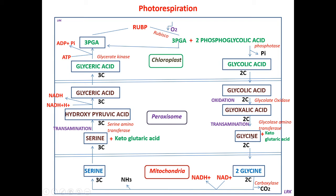This glycine enters into the mitochondria, where two molecules of glycine condense to form serine — a three carbon amino acid. Glycine is a two carbon amino acid and serine is a three carbon amino acid. Two molecules of glycine condense and form serine; here carbon dioxide is released — decarboxylation takes place in the presence of carboxylase enzyme. Carbon dioxide is released and oxygen is absorbed. Since carbon dioxide is released, this is similar to respiration, hence it is called photorespiration.